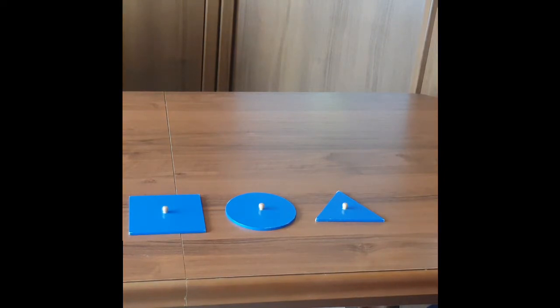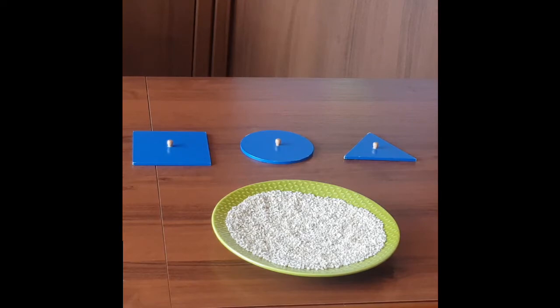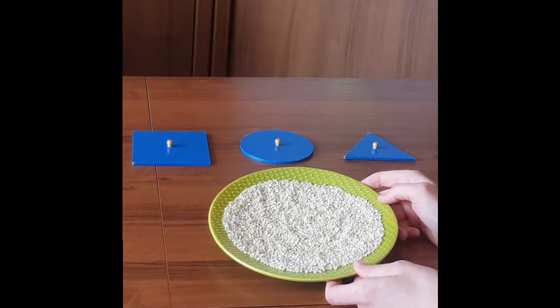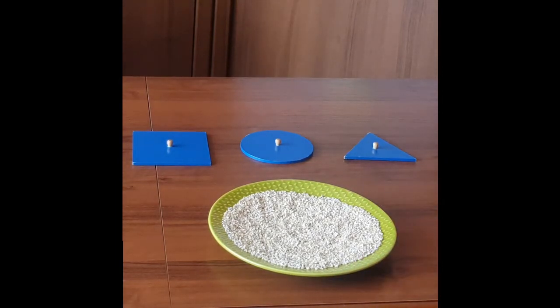For this game we're going to need a plate or a tray with some crumbly stuff. I use barley here but you can as well use sand if you have access to the sandpit, or different kinds of flour or groats, for example semolina. I'm going to draw different shapes here and ask you to guess what it is.